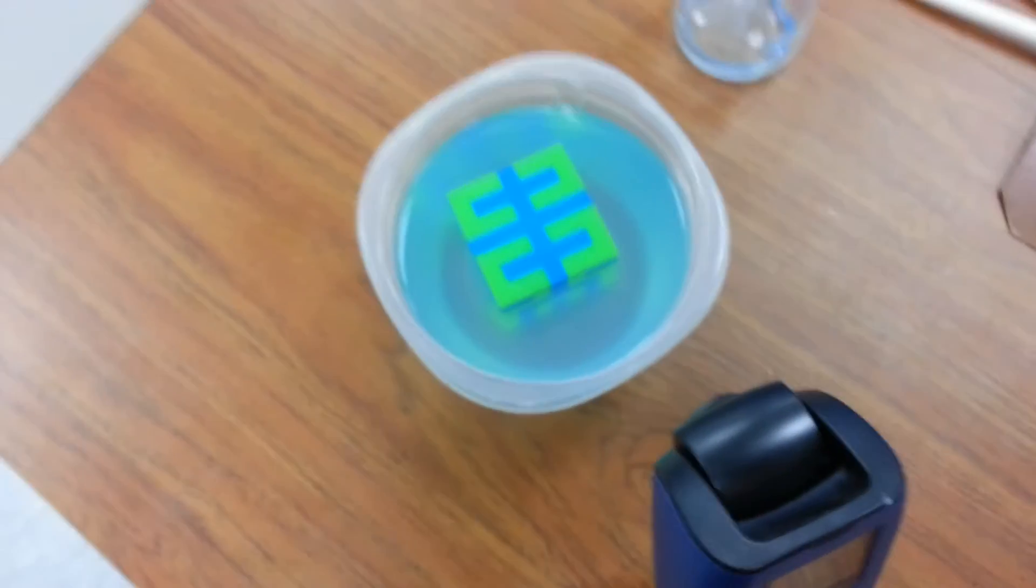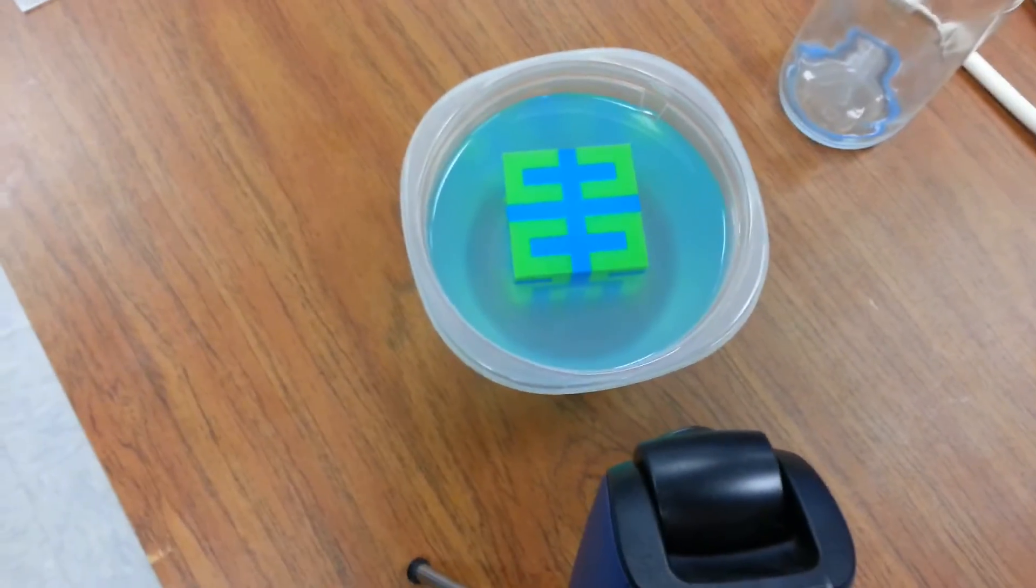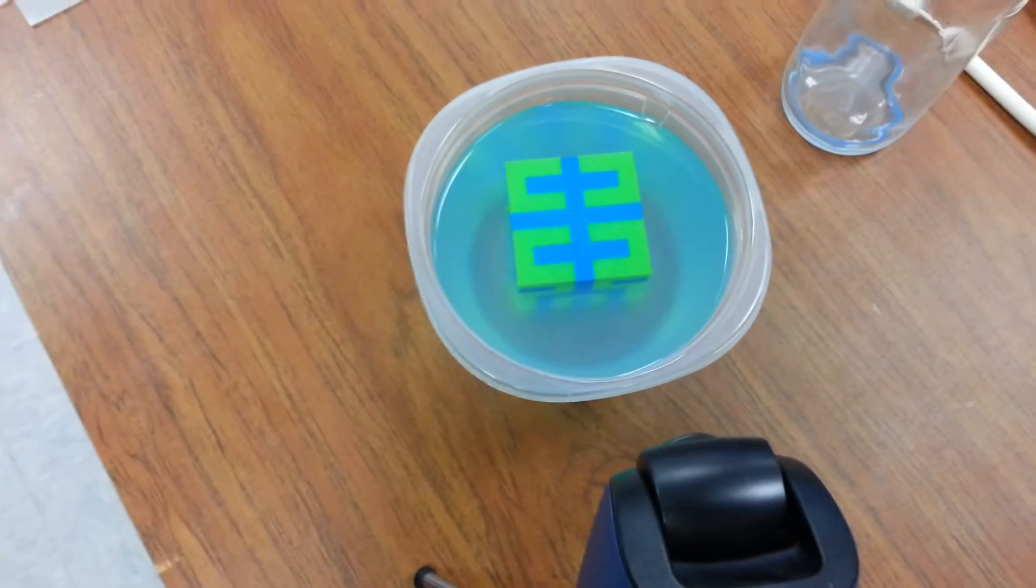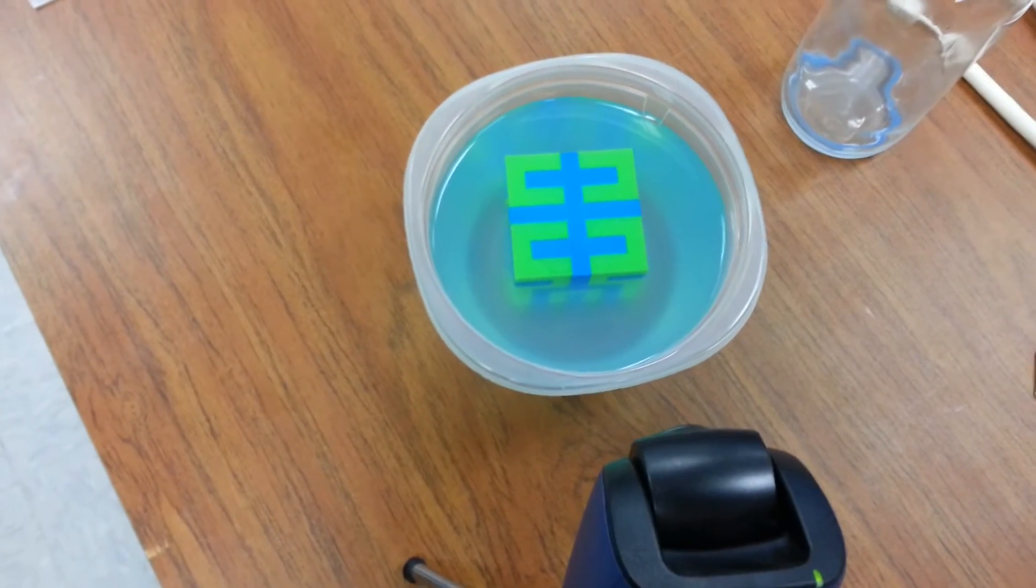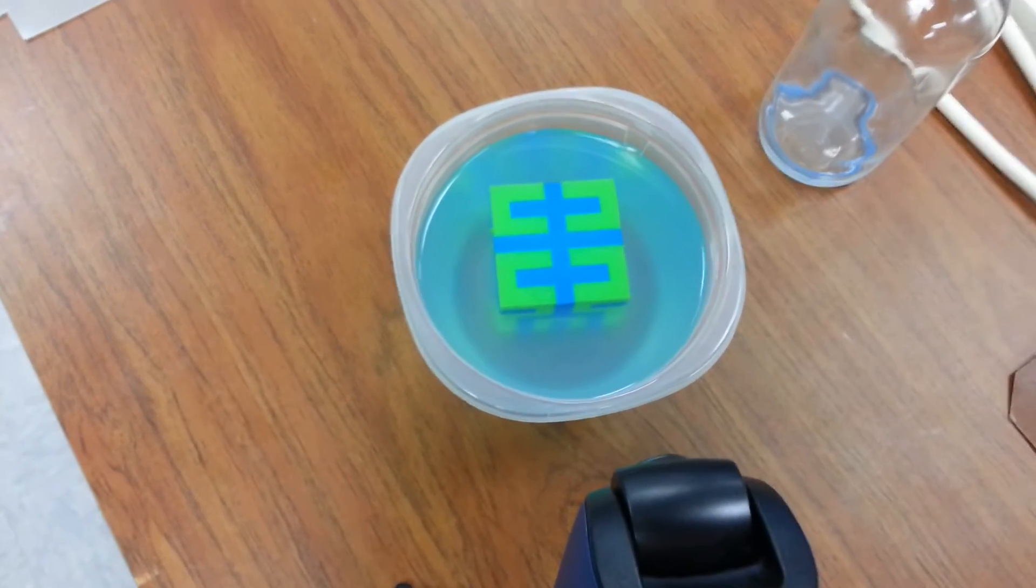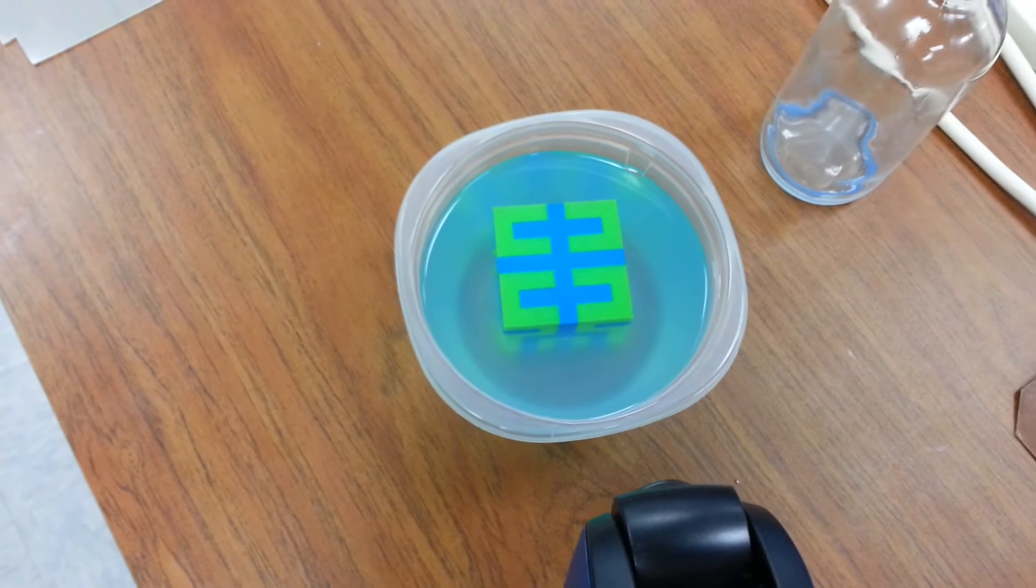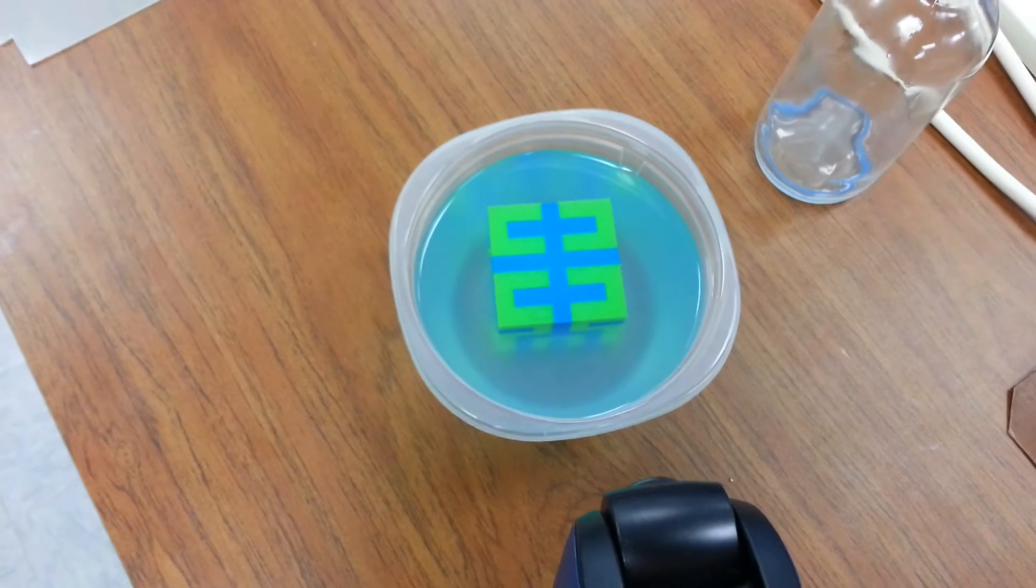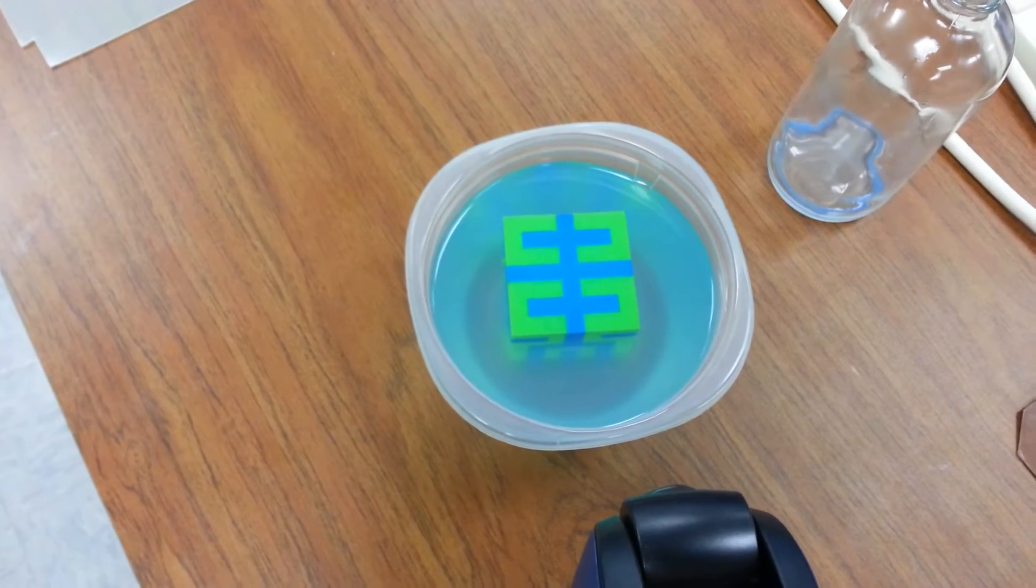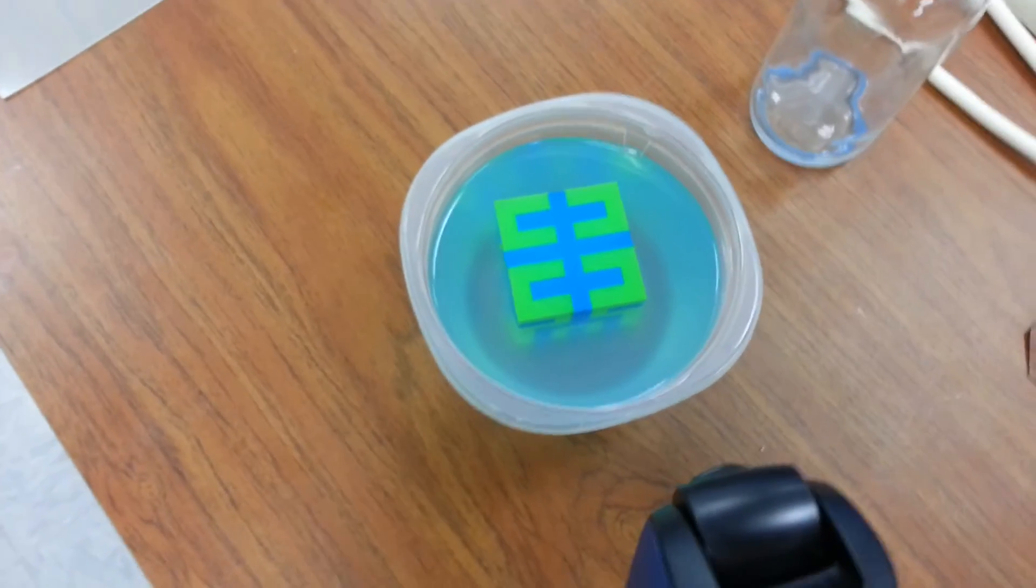The great thing about this support material is that you can print pretty much anything you want and have crazy architectural, different kind of artistic shapes, and then just dissolve away the blue, leaving behind a beautiful object that people will be amazed and wonder how you printed that object.